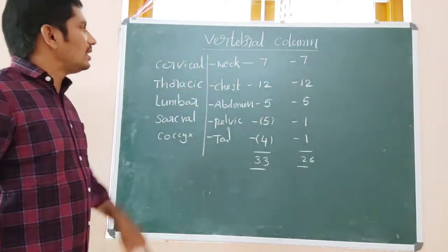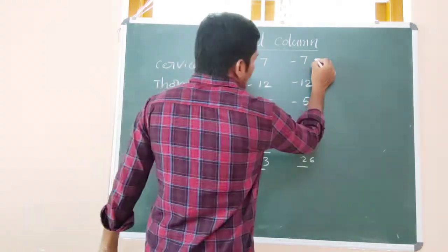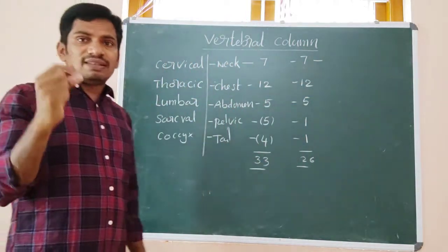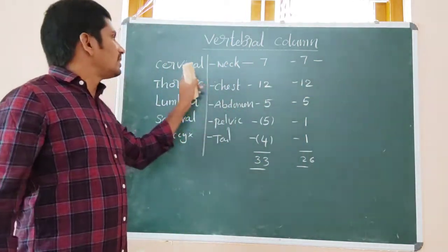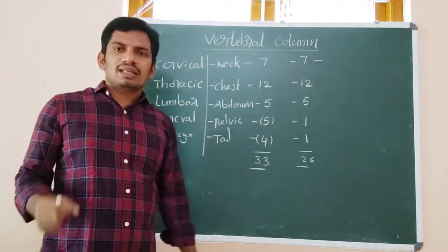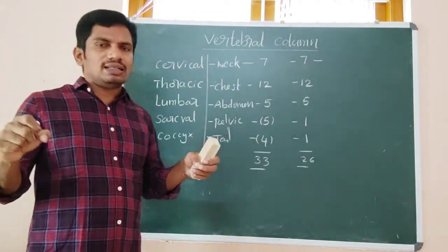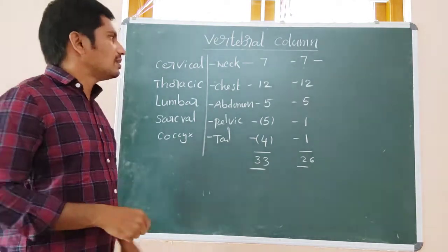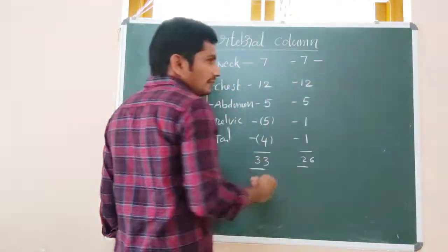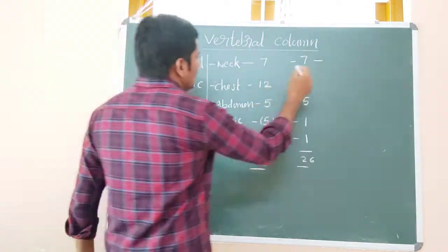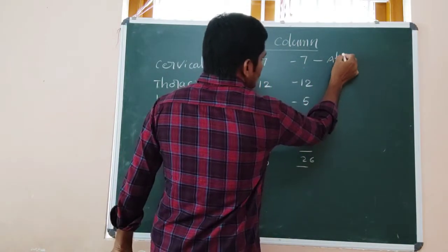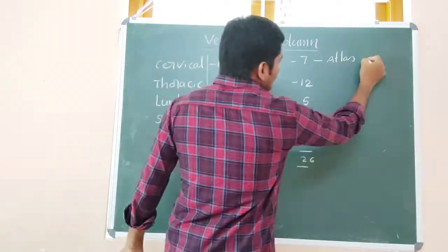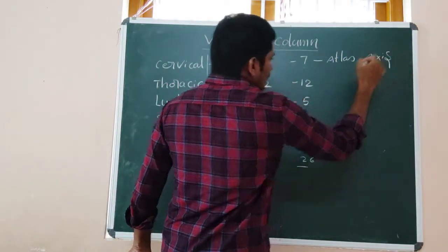The cervical vertebrae are 7 in number in adults and they are small in size. Interestingly, even a giraffe has only 7 cervical vertebrae, but they are longer — that's why the giraffe's neck is longer than other animals. The first cervical vertebra is the atlas, and the second one is the axis.